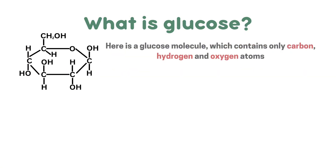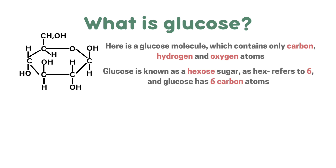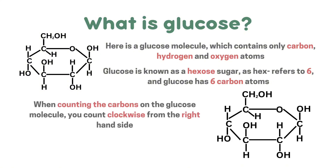Here is a glucose molecule which contains only carbon, hydrogen and oxygen atoms. Glucose is known as a hexosugar as hex refers to six and glucose has six carbon atoms. When counting the carbons on the glucose molecule, you count clockwise from the right-hand side. So as you can see, this is carbon one, two, three, four, five and carbon six.